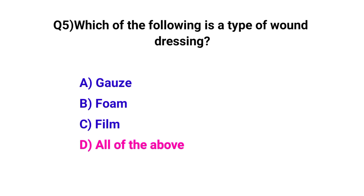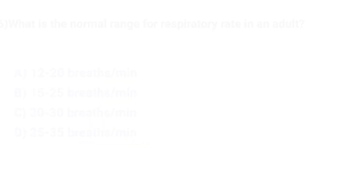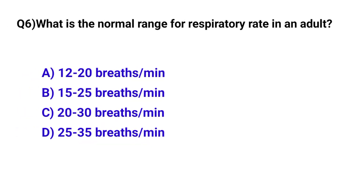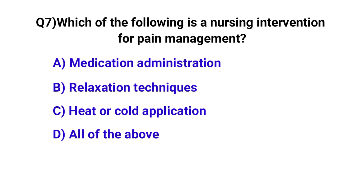Question number five: which of the following is a type of wound dressing? The correct option is D, all of the above. Question number six: what is the normal range of respiration rate in adults? The correct option is A, 12 to 20 breaths per minute.